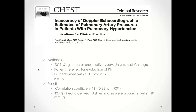A subsequent paper from the University of Chicago by Rich and colleagues did a similar comparison, though echo and right heart cath were done within 30 days. With a larger sample size of 160 patients, they found a very similar correlation coefficient and similar accuracy — only 49% of echo-derived PASP estimates were within 10 mmHg.